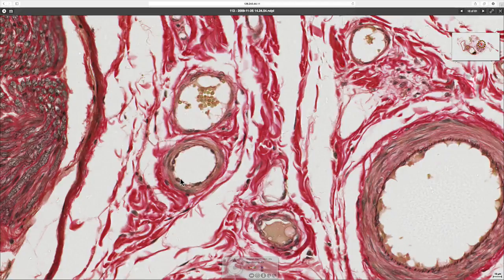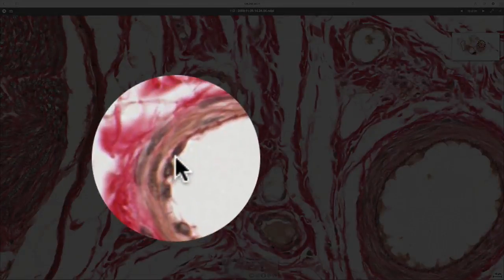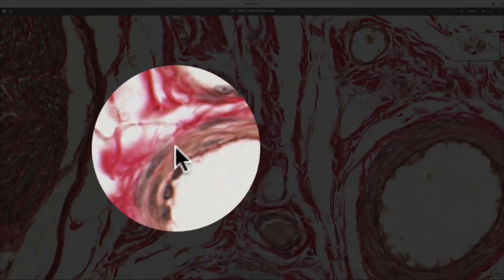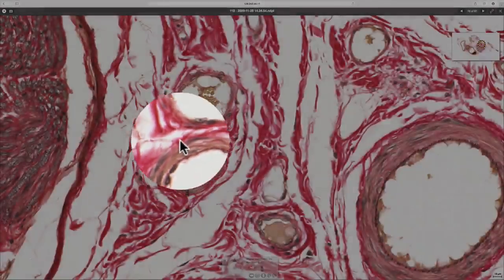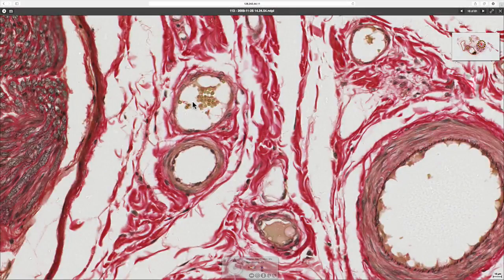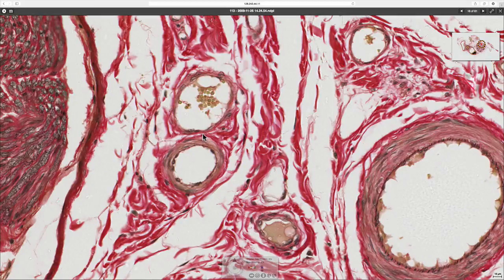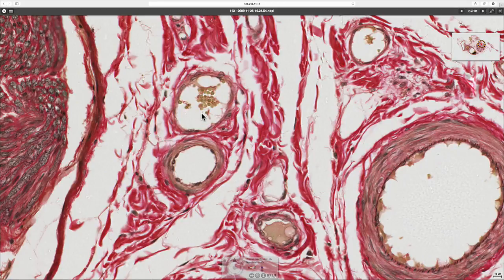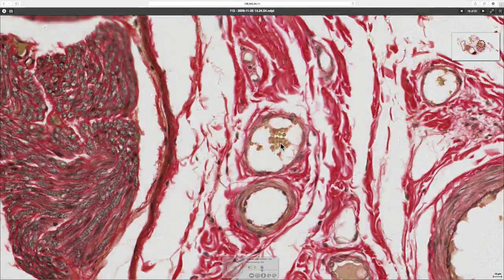But just over here we can see a pair - this is an arteriole and a venule. Again, we've got the flattened nuclei of the endothelial cells and a tunica media and an externa here. You can tell that this is the venule and this is the arteriole because of the size of the wall. So when you see them in pairs, it's quite easy to distinguish one from the other.